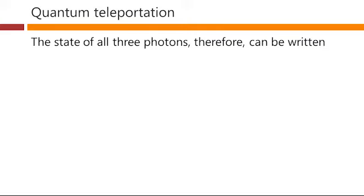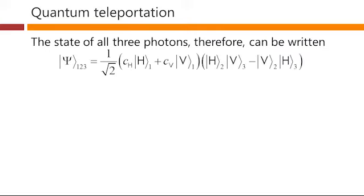The state of all three photons, therefore, can be written like this. So here's the state, the unknown state of photon 1, and here's the state, actually unknown state, of photons 2 and 3. We can be sure that we are generating them in a state like this, for example.